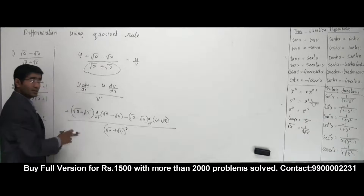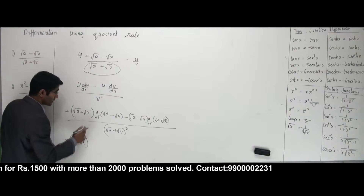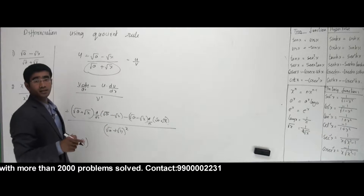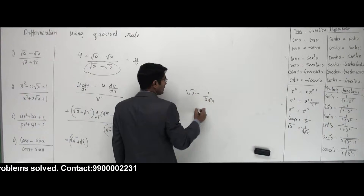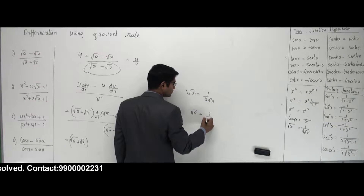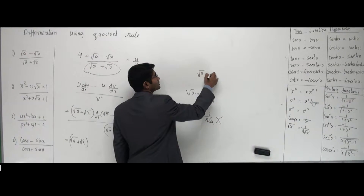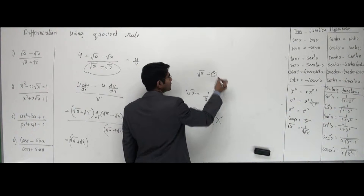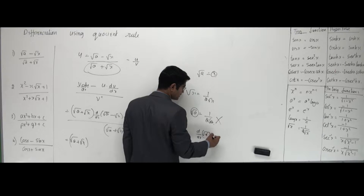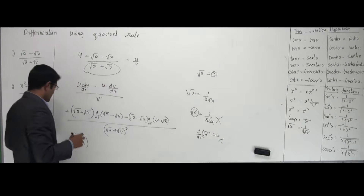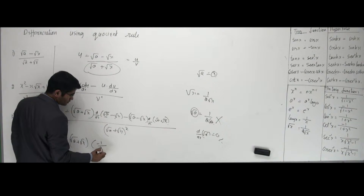Now here I don't have anything to differentiate with root A, so keep it as is — that is root A plus root X. Root A is a constant. For example, root of 9 is 3, and 3 is just a number. The differentiation of a constant is 0. So differentiation of root A is 0, and the differentiation of root X is minus 1 by 2 root X.